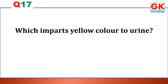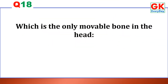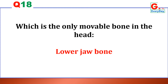Which substance imparts yellow color to urine? Answer: Urochrome. Which is the only movable bone in the head? Answer: Lower jaw bone.